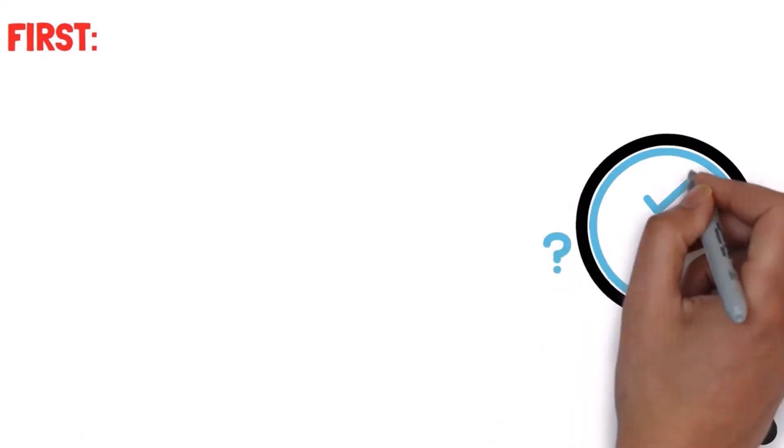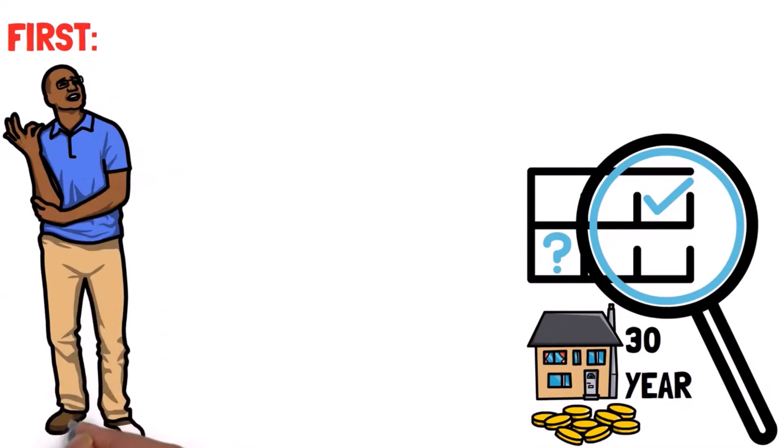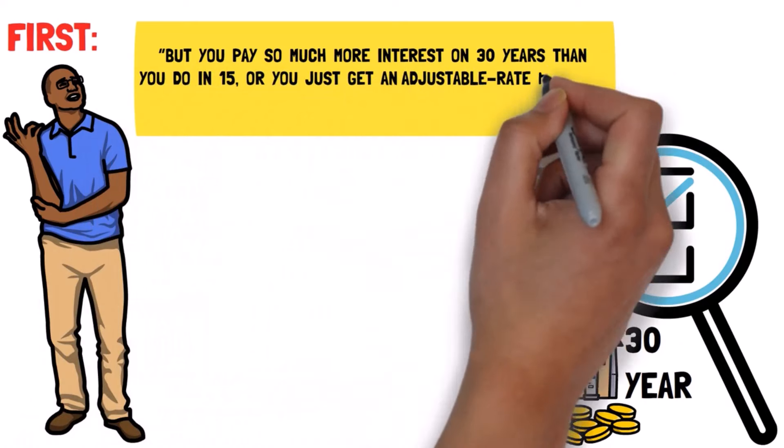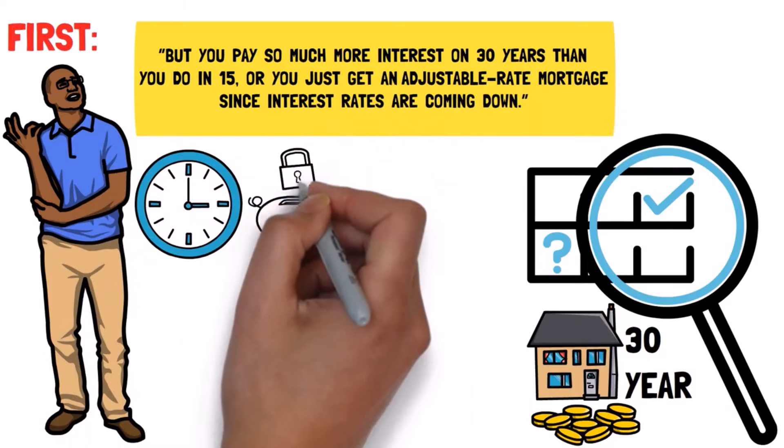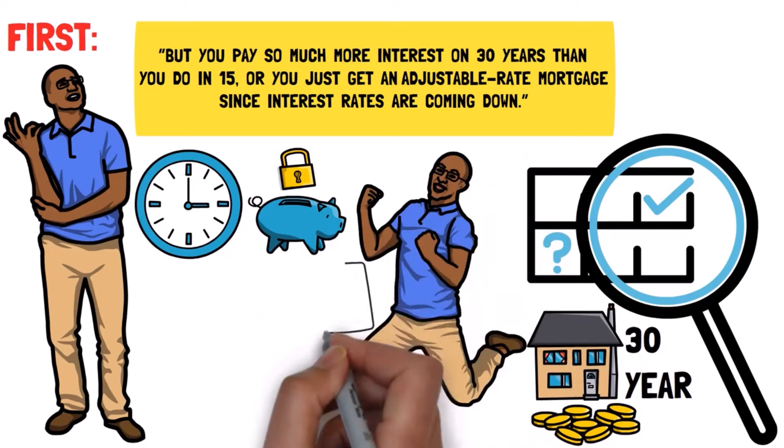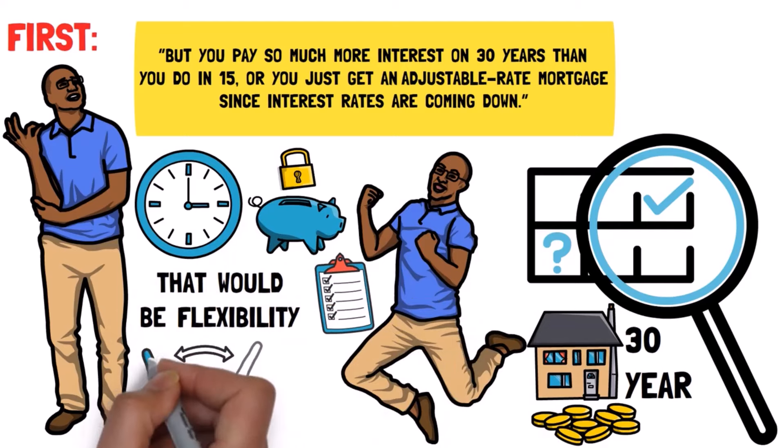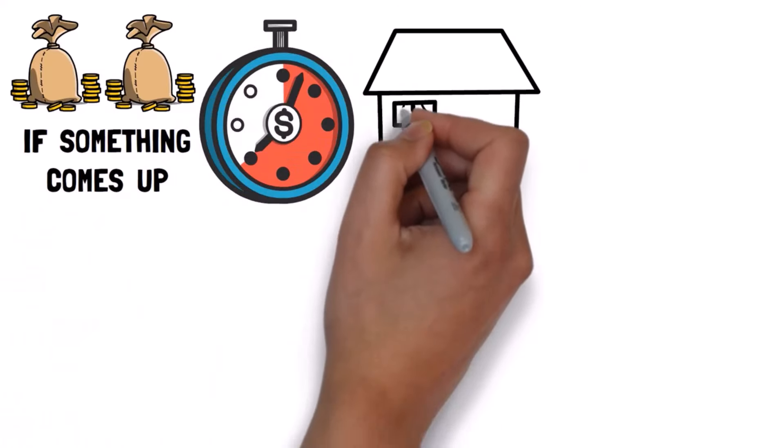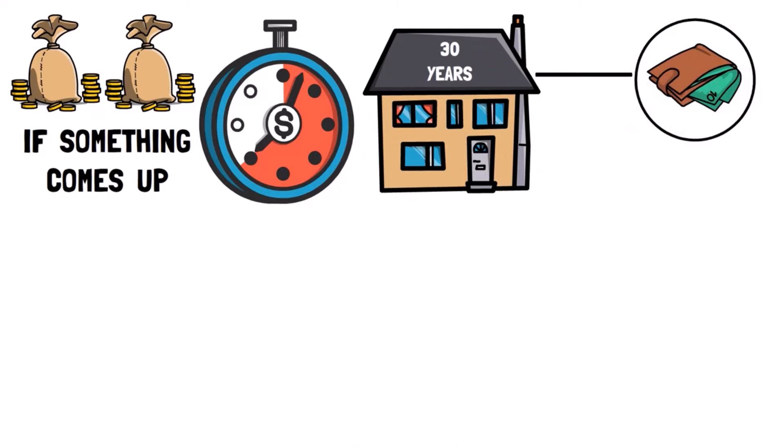The first thing that I'd recommend everybody do is get a 30-year mortgage. Now, I know what most people think when they hear this, but you pay so much more interest on 30 years than you do in 15, or you just get an adjustable rate mortgage since interest rates are coming down. But long term, it could also be a lot safer. That's because the 30-year mortgage gives you a major advantage over pretty much every other option, and that would be flexibility. Like, there's nothing stopping you from paying off a 30-year mortgage in 15 years if you just want to double up the payments. But if something comes up, and you need to cut back or spend a little less money, the 30-year mortgage gives you the flexibility to make the minimum payments if you absolutely need to. And I think that's invaluable.